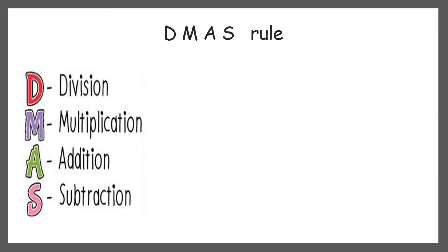The DMAS rule. This is the rule we use when we have different operations in a single question. D is for division, M is for multiplication, A is for addition, and S is for subtraction. So first we do division, after division we do multiplication, then we do addition, and then we do subtraction.